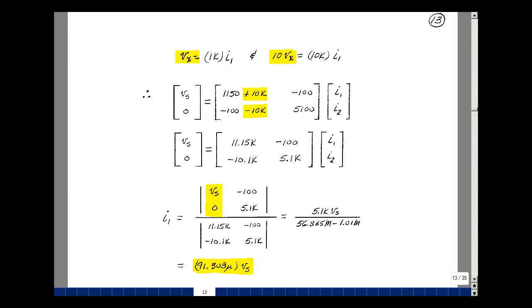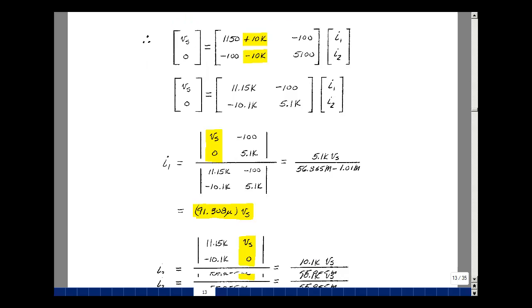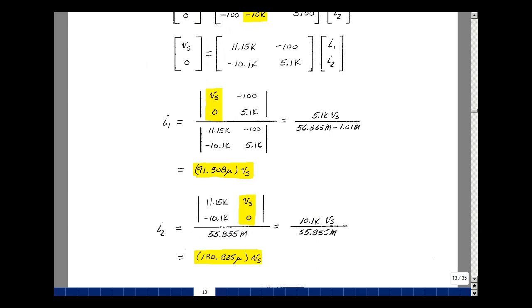So my result is in terms of V sub S. It's turned out to be 91.308 micro. So I'll solve for I2 by bringing this side of the equation into this column. So I've got zero here and minus a minus 10.1K times V sub S. And I've got the same denominator I had before. And that turns out now to give me 180.825 micro times V sub S.